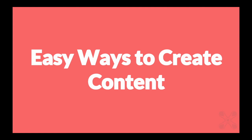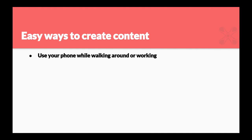Let's talk about easy ways to create content — it's not that difficult, you just have to do it. First, just use your phone while you're walking around or working. When I was running shops I had my phone in my pocket, and when somebody was doing something cool I'd just take it out and snap a picture or make a short video. Then save and post them. I created a Flickr account, uploaded pictures every Friday, and shared to Pinterest or my website. Fresh content all the time.